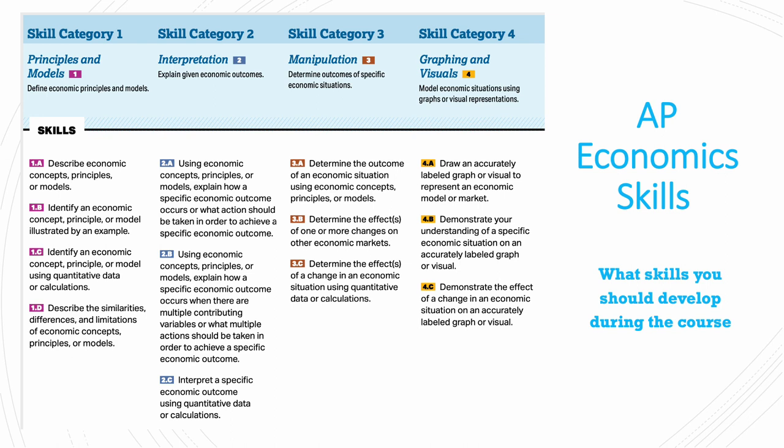The fourth skill category, which is very important, is graphing and visuals — to model economic situations using graphs or visual representations. This entails drawing an accurately labeled graph or visual to represent an economic model or market, demonstrating your understanding of a specific economic situation using an accurately labeled graph or visual, and demonstrating the effect of a change in an economic situation on an accurately labeled graph or visual.